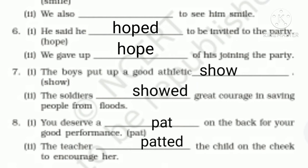Sixth: 'He said he dashed to be invited to the party.' The word given is 'hope,' so we write 'hoped' as a verb. Next: 'We gave up dash of his joining the party,' so here it will be 'hope' as a noun. Seventh: 'The boys put up a good athletic dash.' The word given is 'show,' so we write 'show' as a noun. Next: 'The soldiers showed great courage in saving people from floods' — 'showed' is the verb.